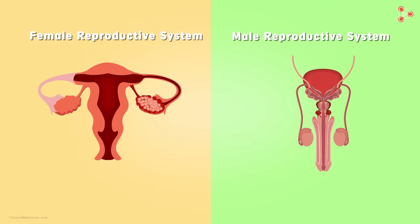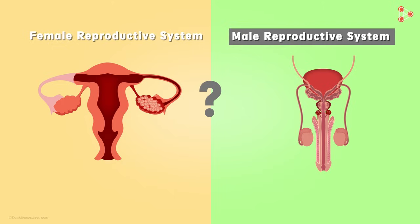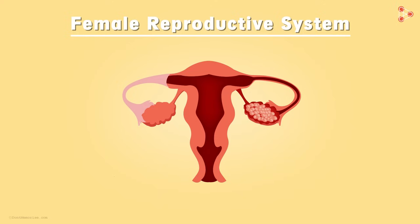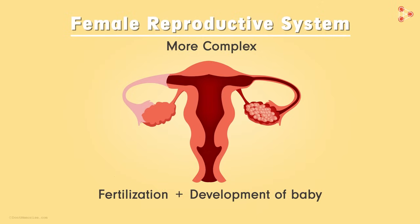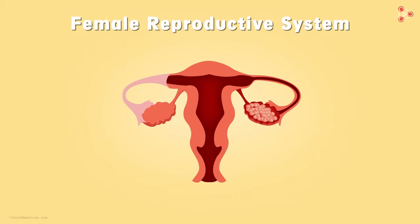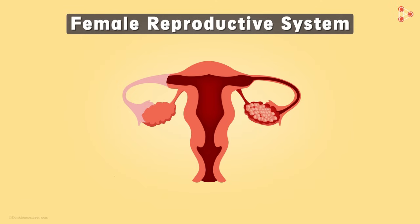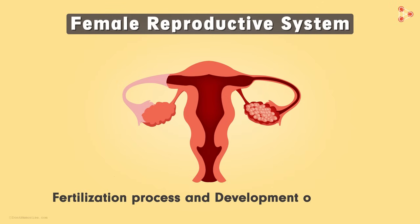Now that you have learned both the reproductive systems, can you tell me which one is more complex? The female reproductive system is more complex. The system is designed for the complete process of fertilization as well as the growth and development of the baby, which is why it is slightly more complicated compared to the male reproductive system. This was just an overview of how the female reproductive system works. We would get to know how every organ works efficiently when we understand the process of fertilization and the development of the embryo in detail in our next video.